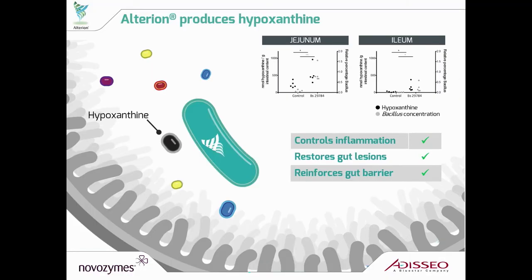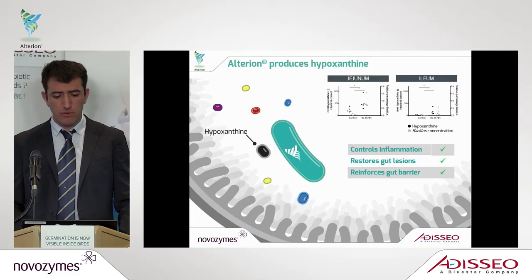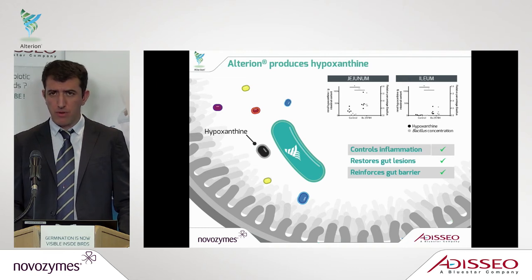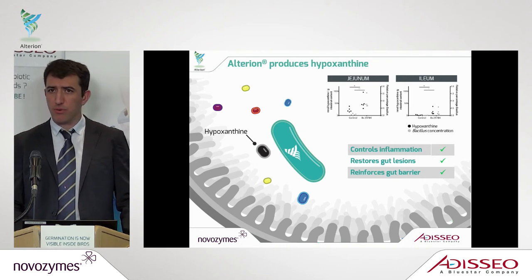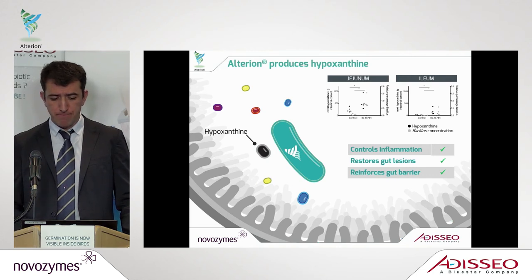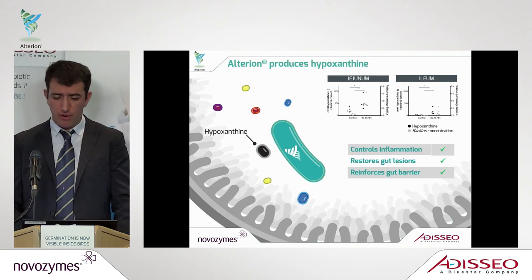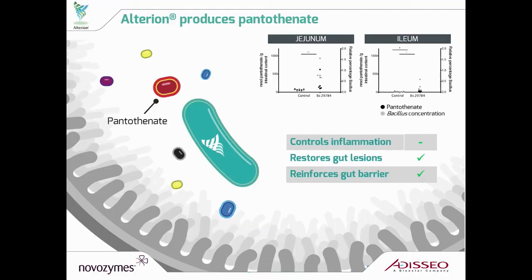The second metabolite identified and produced in significant amounts across different conditions was hypoxanthine. We also correlated the production of hypoxanthine with the presence of Alterion in the gut. Hypoxanthine is quite an interesting one because it has a very broad effect — on inflammation, restoring gut lesions, and reinforcing the gut barrier — so this key component is really important across different pathways, which is why it has a large spectrum of action.